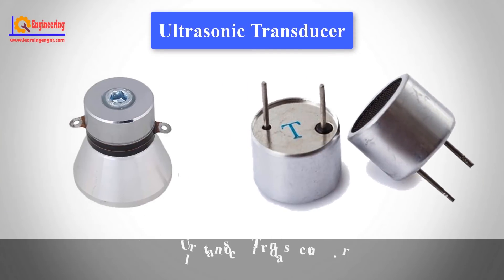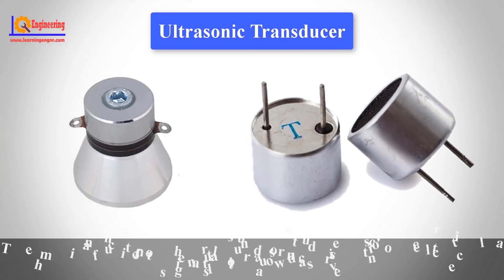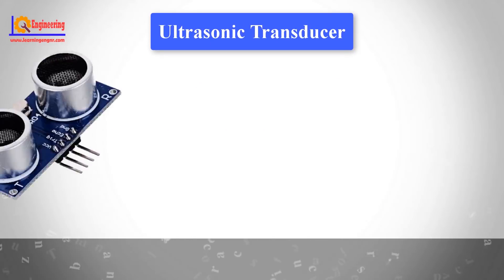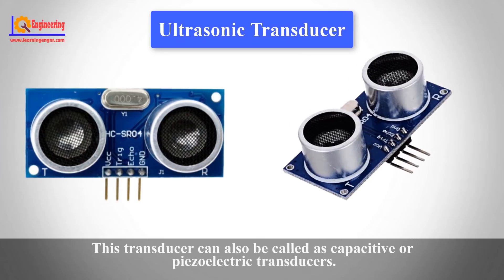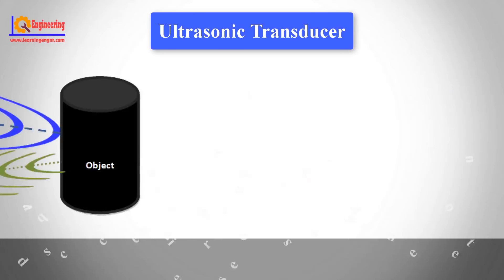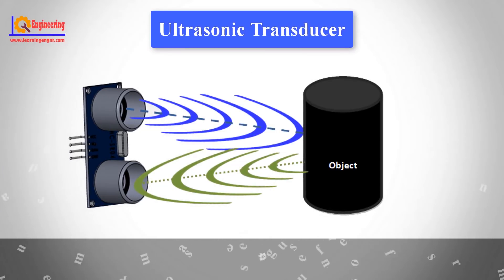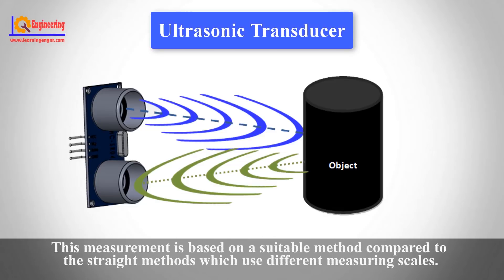The main function of the ultrasound transducer is to convert electrical signals to ultrasound waves. This transducer can also be called a capacitive or piezoelectric transducer. It can be used to measure the distance of sound based on reflection. This measurement is based on a suitable method compared to straight methods which use different measuring scales.